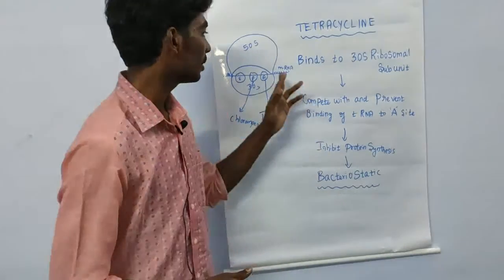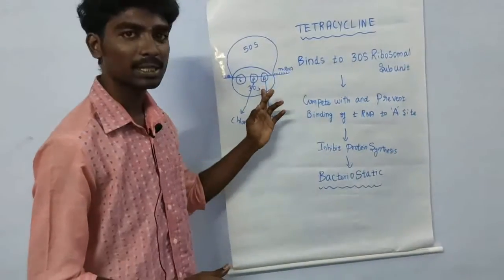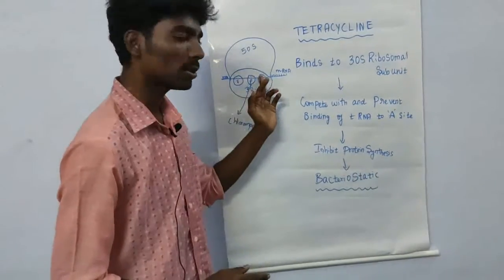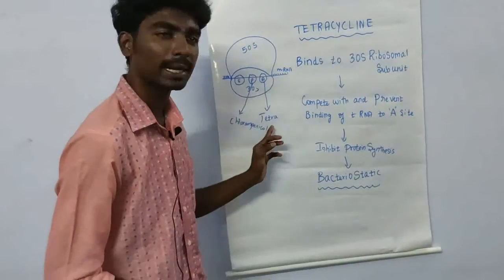This is the tetracycline mechanism. Tetracycline inhibits protein synthesis. This is mRNA, 50S and 30S units. Here are three sites: A, P, and E sides.